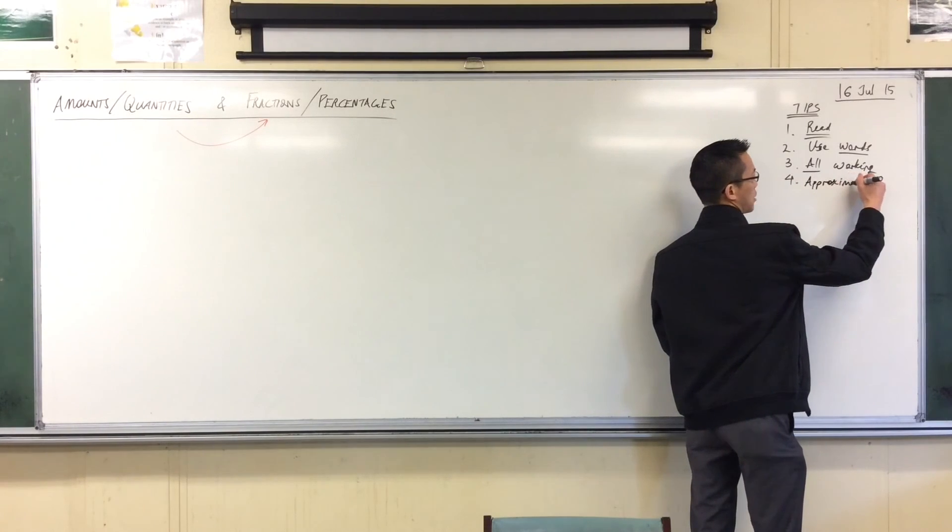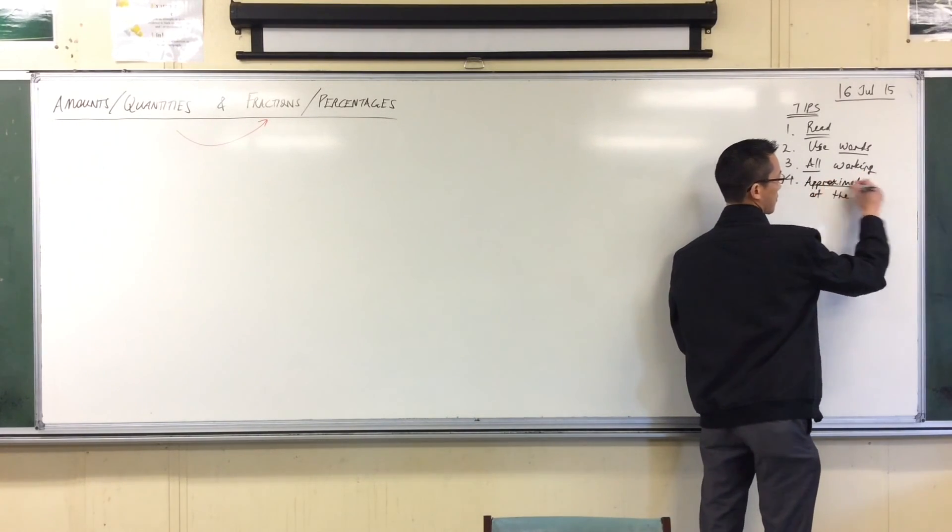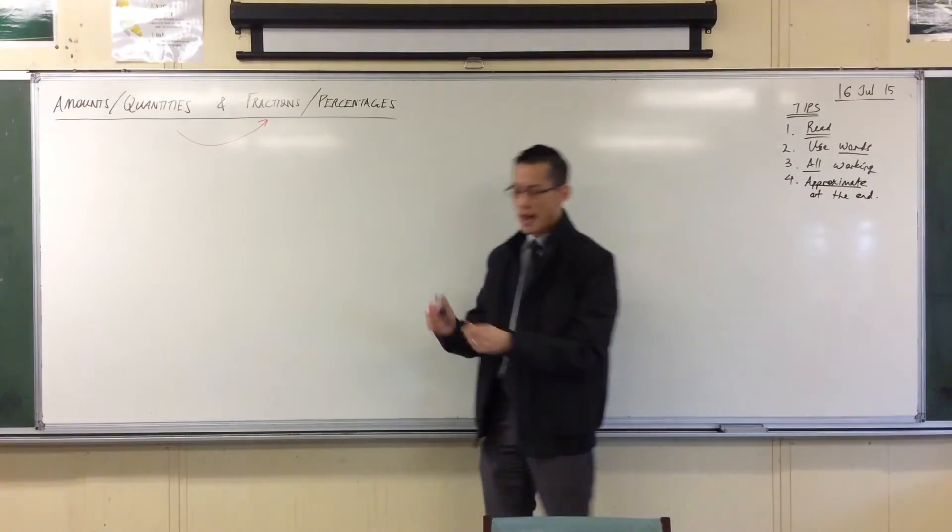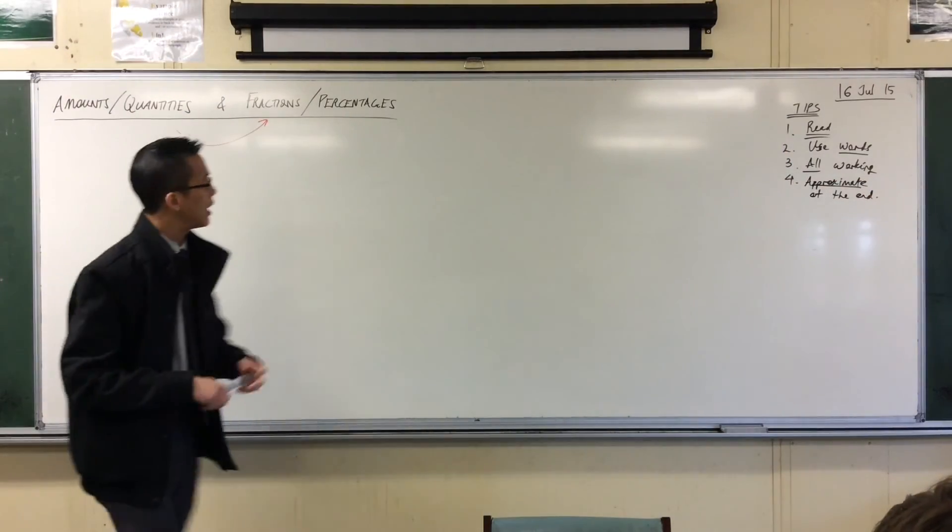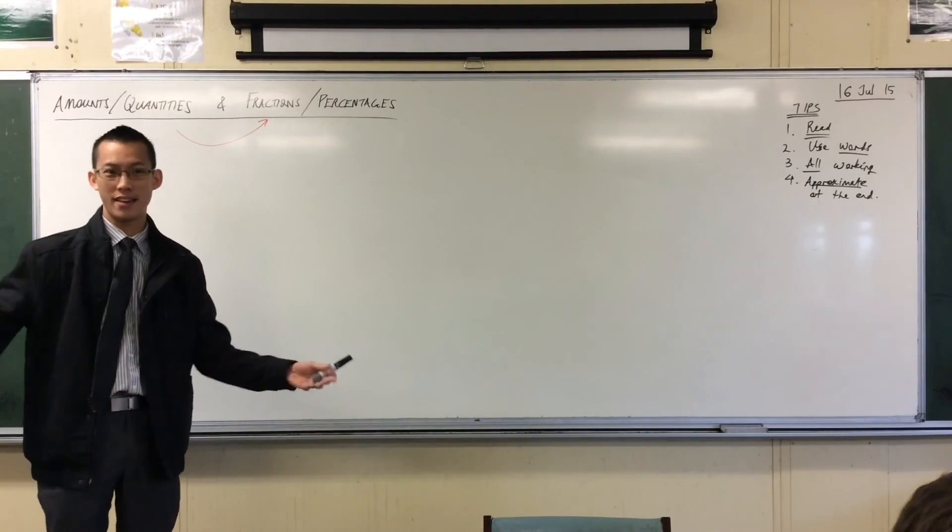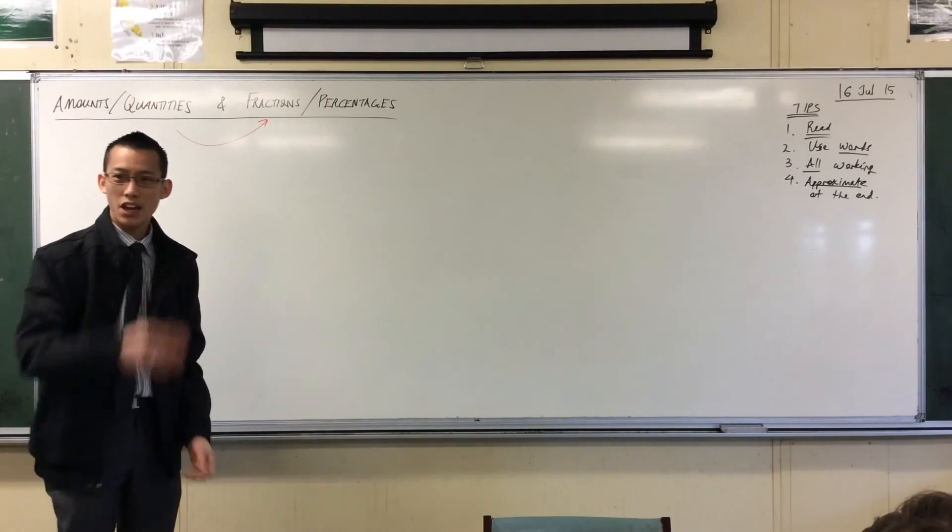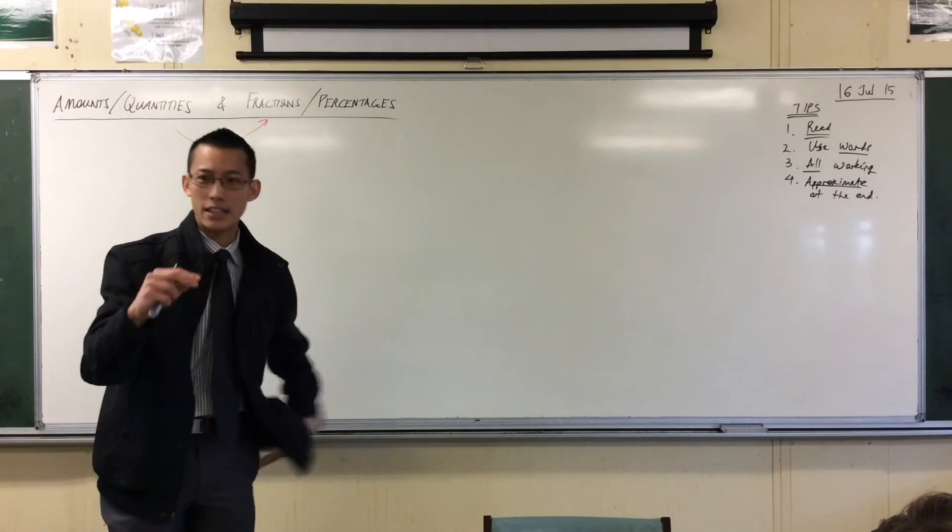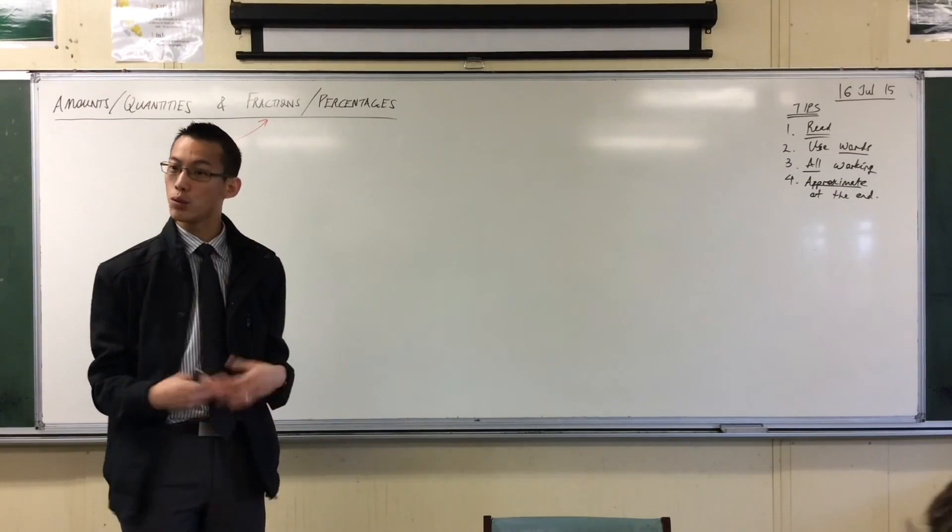It's at the end because the place you should approximate is at the end. You may have to approximate and say, three pieces of pizza out of eight I think is 37.5%. If I wanted that to the nearest percent, you would do that right at the very end. It's your last step actually, to approximate. Don't approximate early.